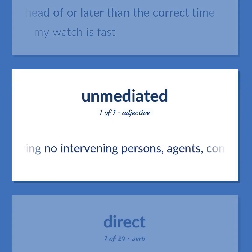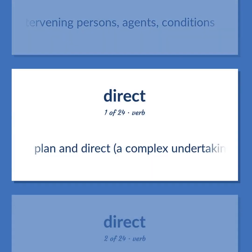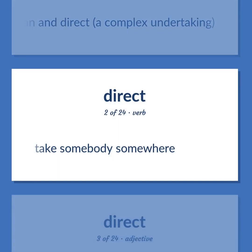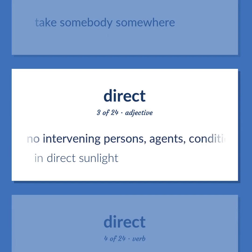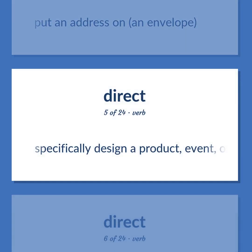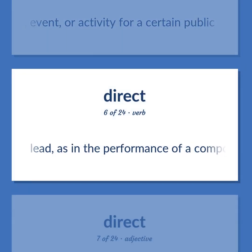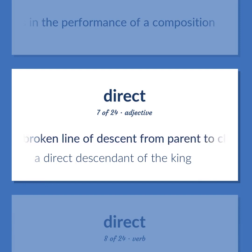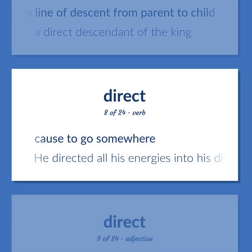Direct: Having no intervening persons, agents, or conditions. Plan and direct a complex undertaking. Take somebody somewhere. Indirect sunlight. Put an address on an envelope. Specifically design a product, event, or activity for a certain public. Lead, as in the performance of a composition. In a straight unbroken line of descent from parent to child — a direct descendant of the king. Cause to go somewhere — he directed all his energies into his dissertation.